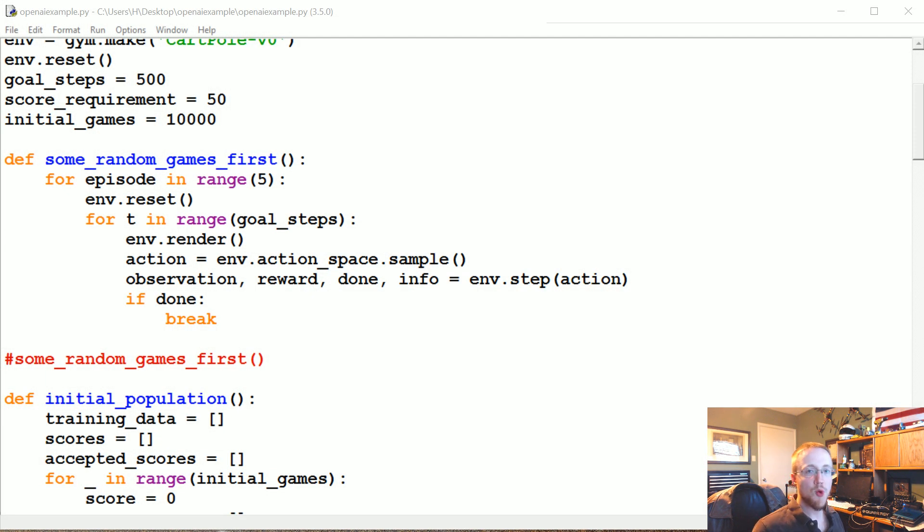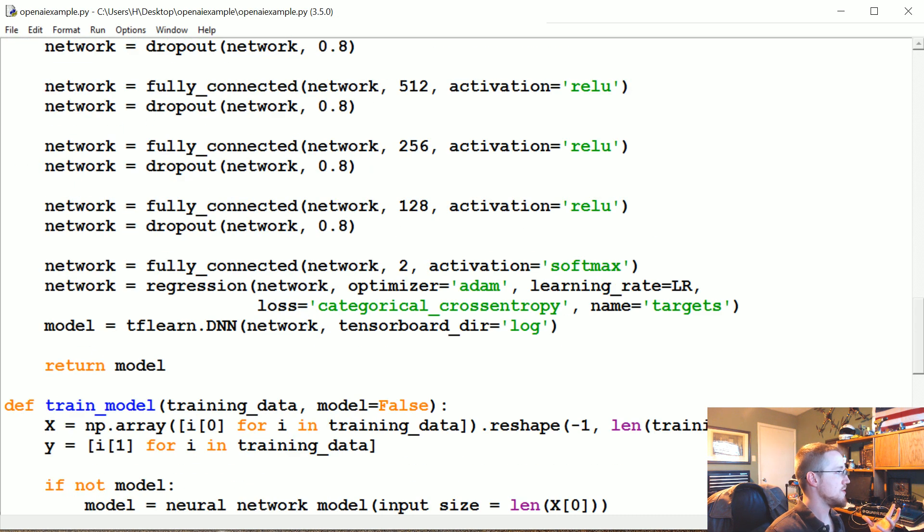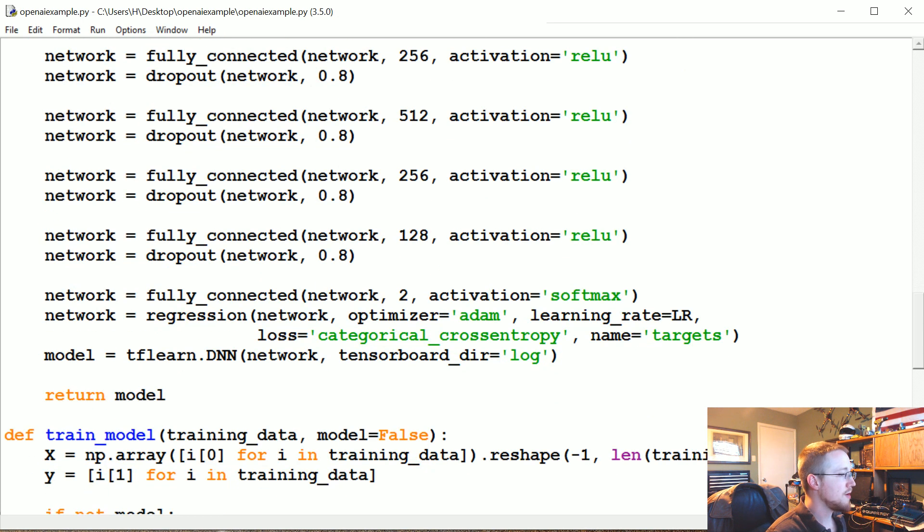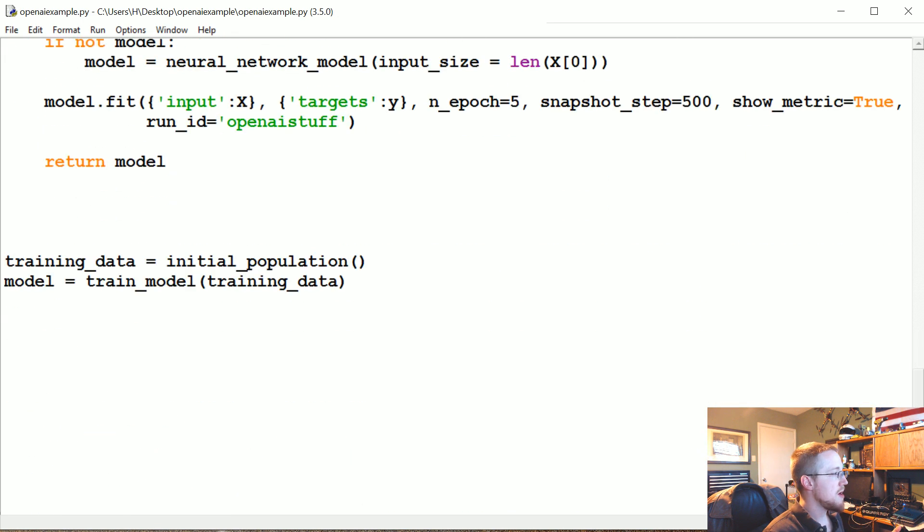What's up everybody, welcome to part four of our playing games with OpenAI, Python, TensorFlow, neural networks and everything else tutorial. In the last tutorial we basically covered creating our neural network model and training that model. We saw the results weren't that great - it was like 60% accuracy and actually ended on like 57. We did see loss come down though, that's arguably more important.